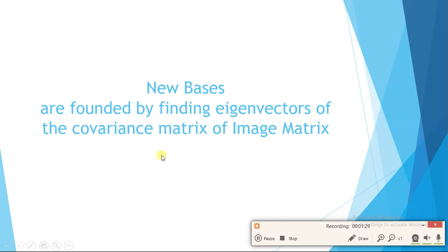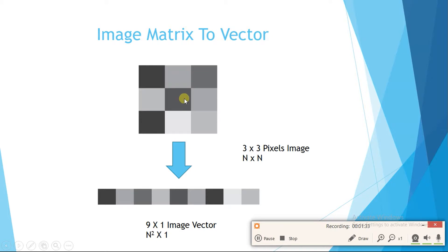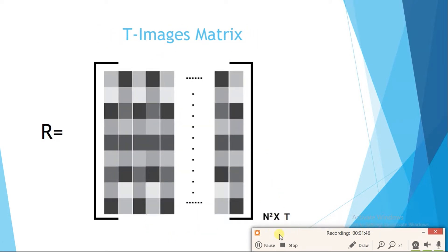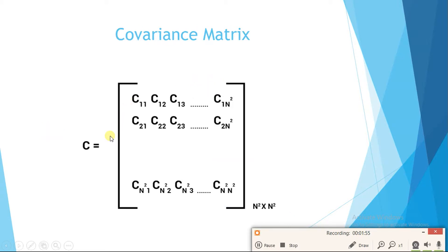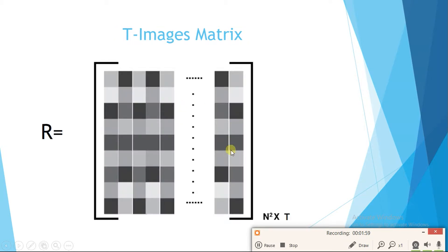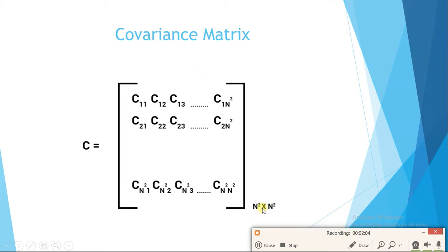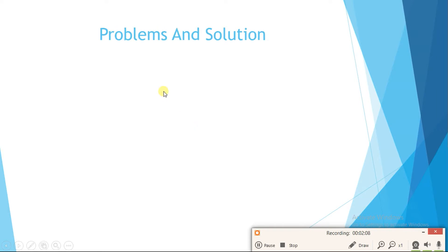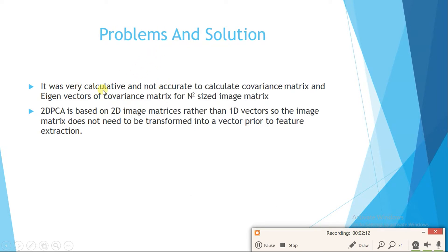In PCA, to find the covariance matrix we used SVD. First we created the image matrix — a single image was originally n×n, converted into a vector of size n²×1, and the full image matrix becomes n²×t where t is total number of images. The covariance matrix then becomes n²×n², which is very computationally expensive and not accurate to calculate eigenvectors for. This was the main problem with PCA.